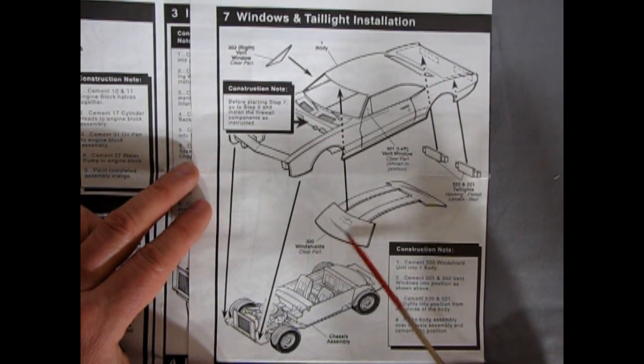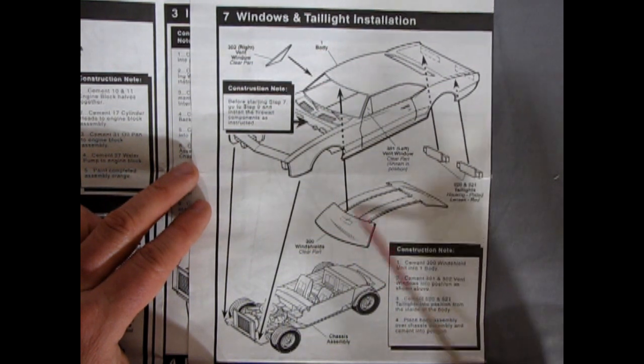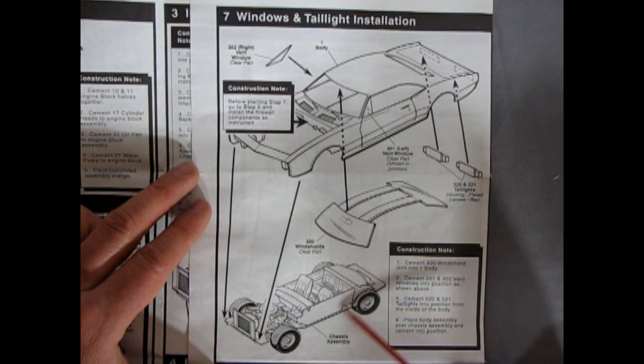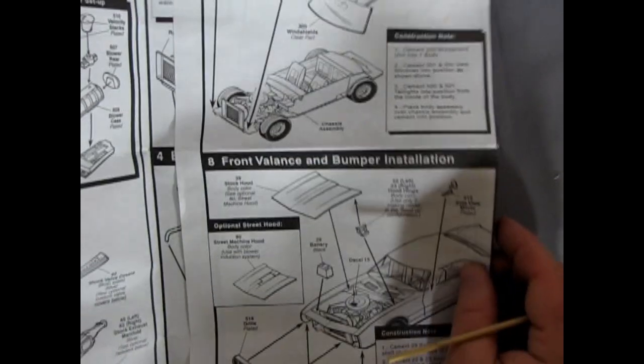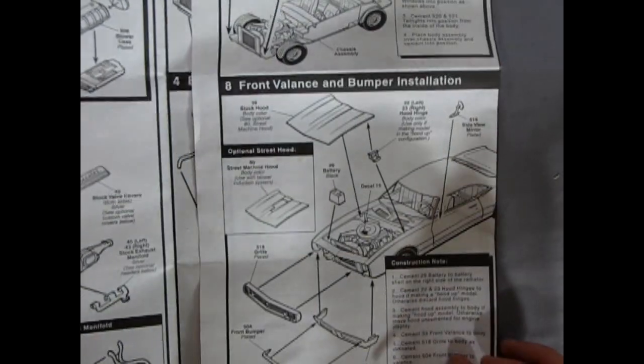And now folding our instructions up, we have step seven, which is our windows and taillight installation. And the windows are, again, 60s style with the actual rearview mirror molded in. And then the bars in the back here popping on. So I don't think this was a new tooling at the time. I think they just modified it a little bit by putting the 302 in. I'm not sure.